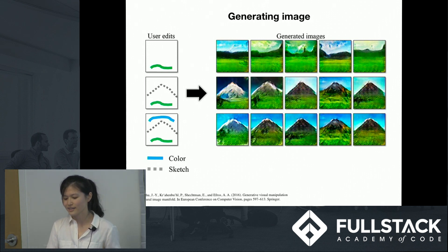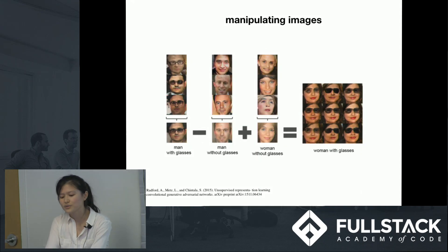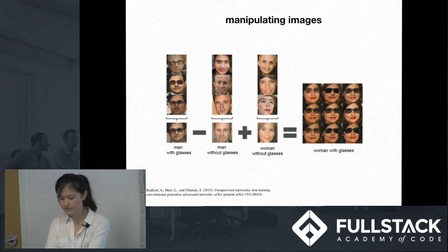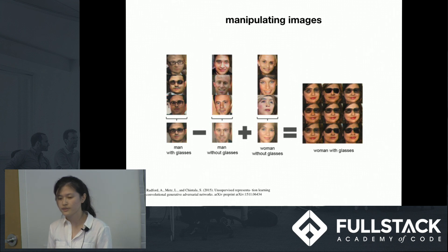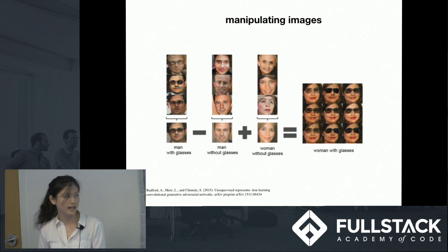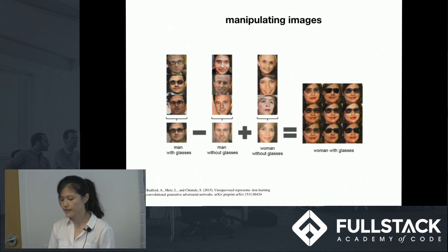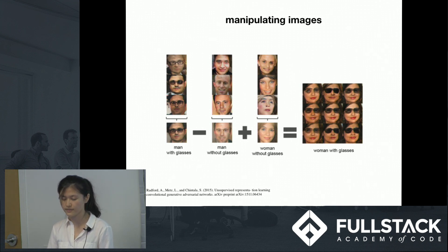Applications that create art are one of many reasons to study generative models that create images. GANs also have the ability to take averages of images and add or subtract them. Here, GANs begin with a man with glasses, then subtract a man without glasses, and then add a woman without glasses. At last, a woman with glasses can be obtained.